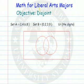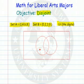In this video, we're going to look at sets that are disjoint. We're going to have our universal set of the digits, set A and set B. We're going to put these now into our drawing. Here's set A, set B, and our universal set.